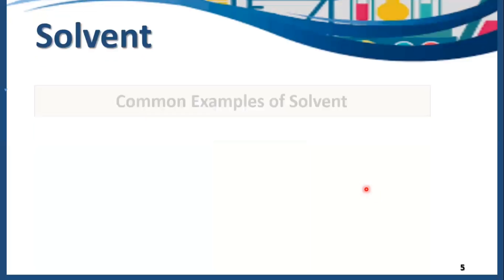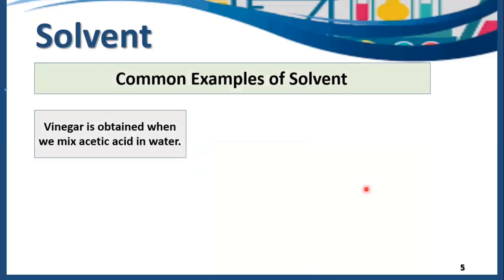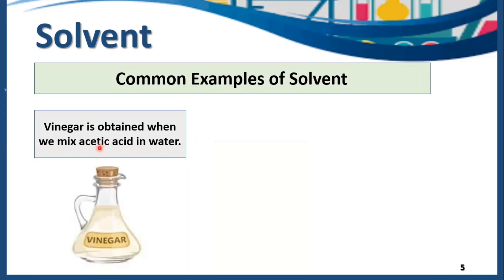We have some other common examples of solvent. Vinegar is obtained when we mix acetic acid in water. Now acetic acid is in the smaller quantity and it is dissolved in water. So acetic acid is a solute here, but water is a solvent here because it is in the larger quantity and it is in the liquid state also.